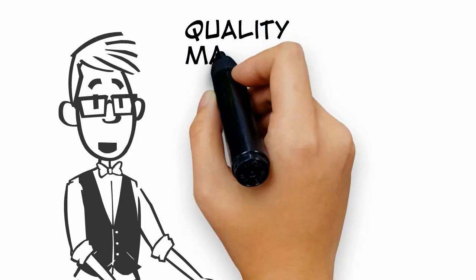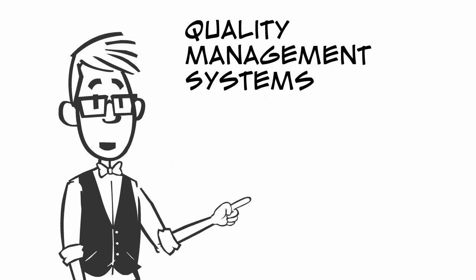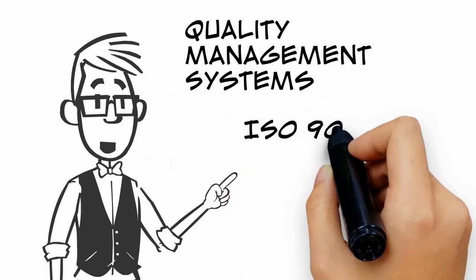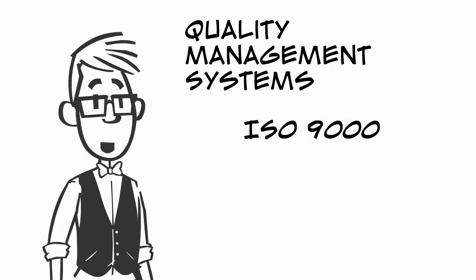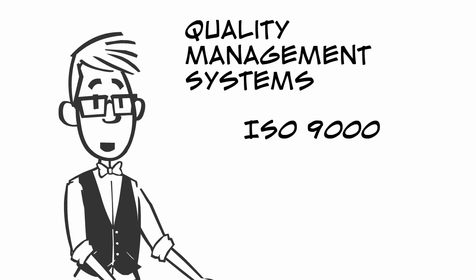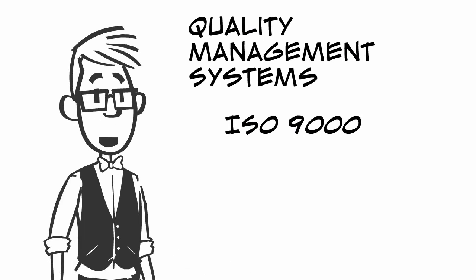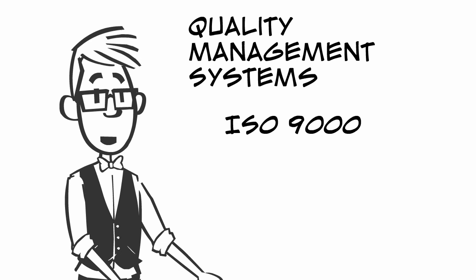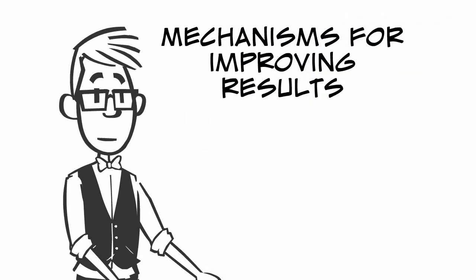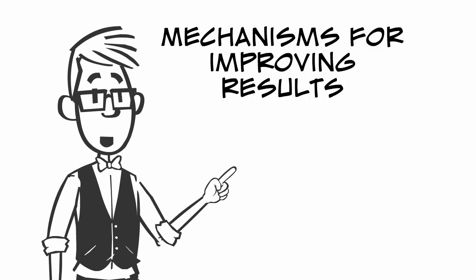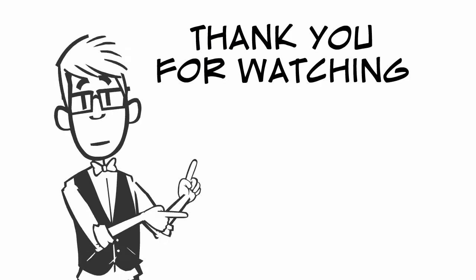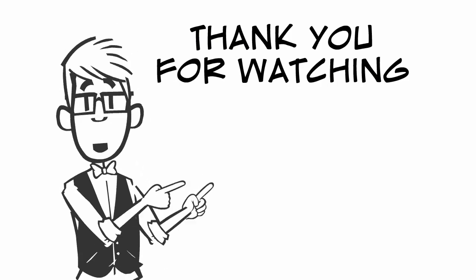There are many other operational controls. Some are known as quality management systems, such as the International Standard 9000, that is often required by suppliers in order to do business. All operational controls are simply mechanisms for improving results.